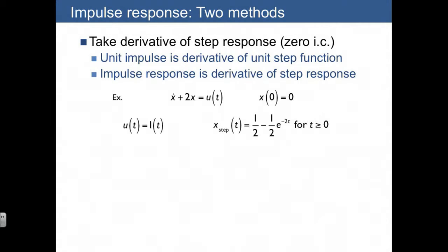Let's first apply a step function. We've already found this sort of response before. Here, it's 1/2 minus 1/2 e^(-2t). If we take the derivative of the step function, we get the impulse. And if we take the derivative of the step response, we get e^(-2t).